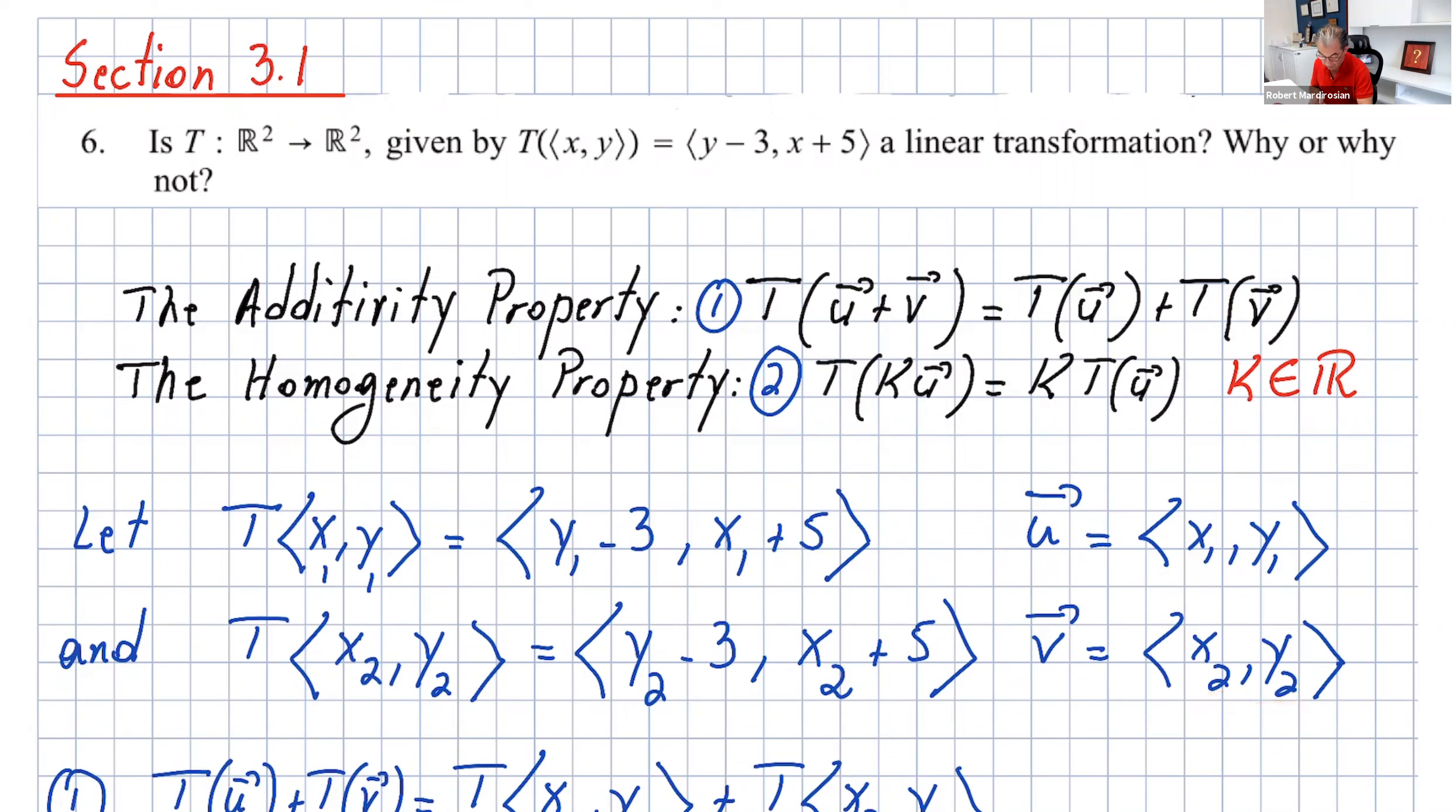So T(x₁, y₁) is y₁ - 3, x₁ + 5, and T(x₂, y₂) is going to be y₂ - 3, x₂ + 5.